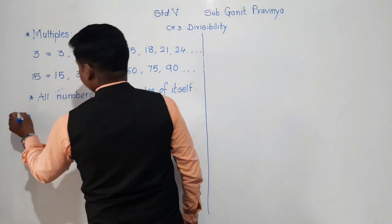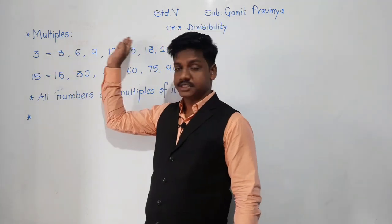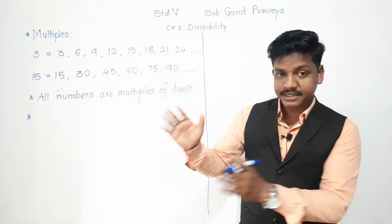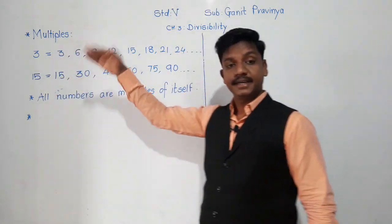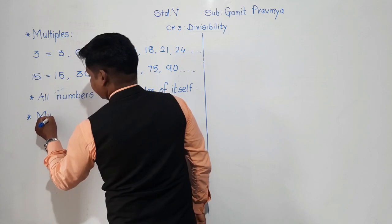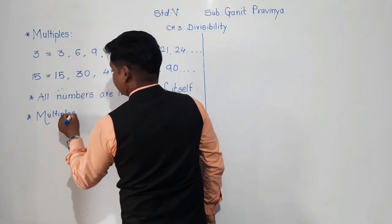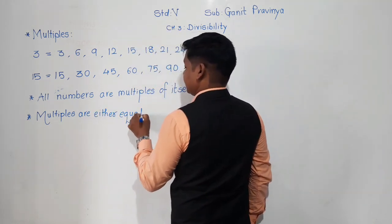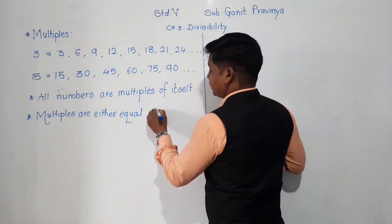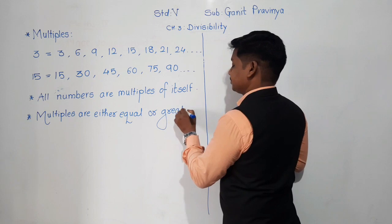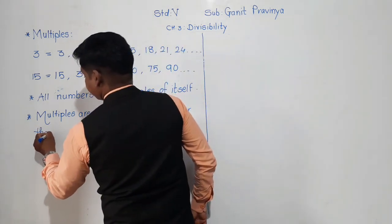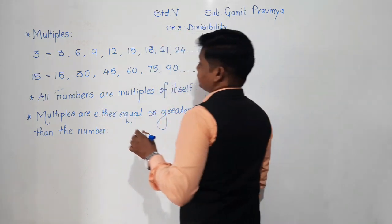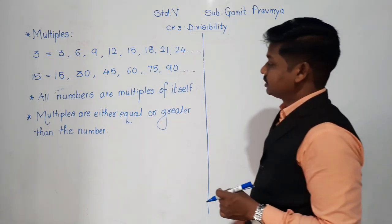Secondly, all multiples are either equal to or greater than the number. In factors we have seen that factors are either equal to or smaller than that number. But here multiples are either equal to or greater than that number. These are the properties of multiples.